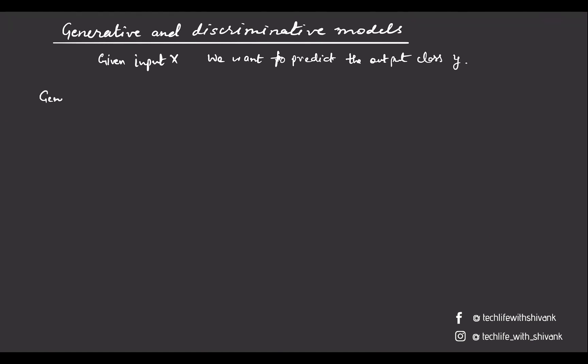In the case of generative models, we will calculate the joint probability — that is the likelihood of x and y — and we will predict the class for which the joint probability P(x, y) is maximum.